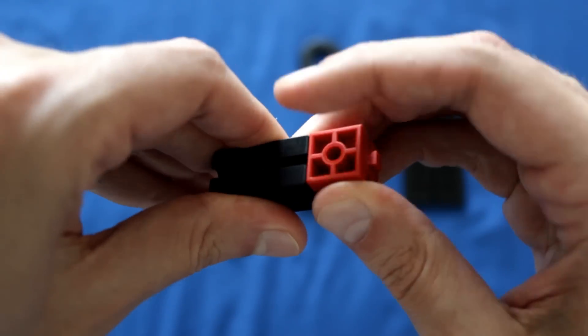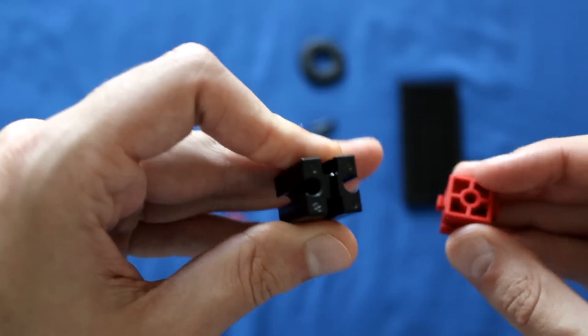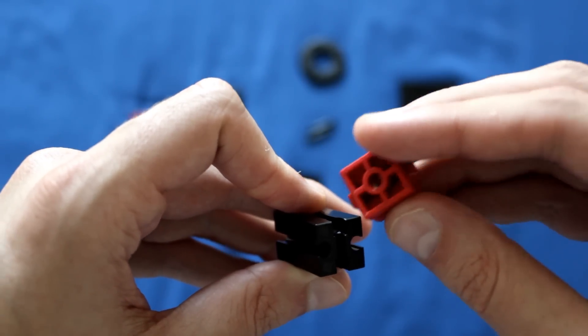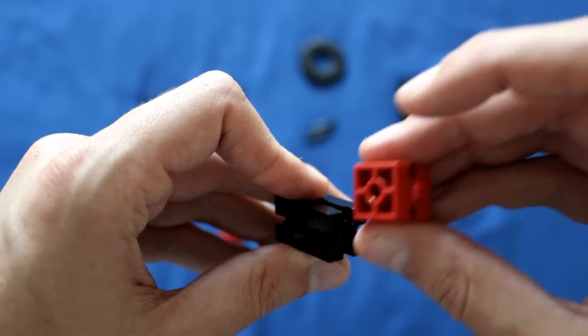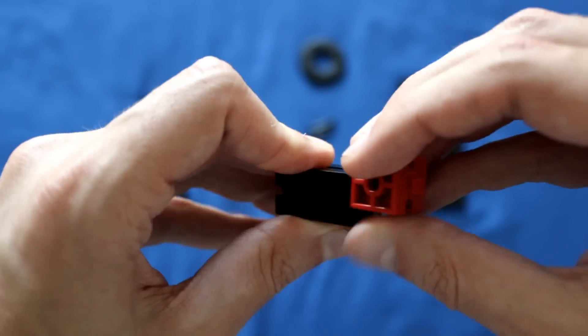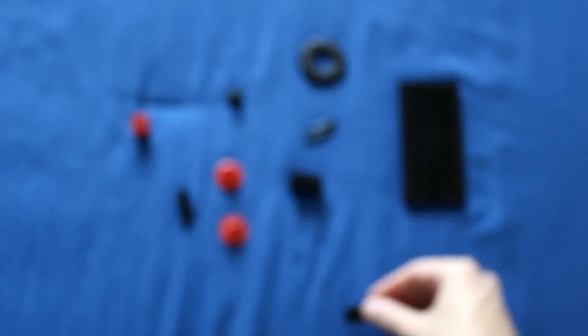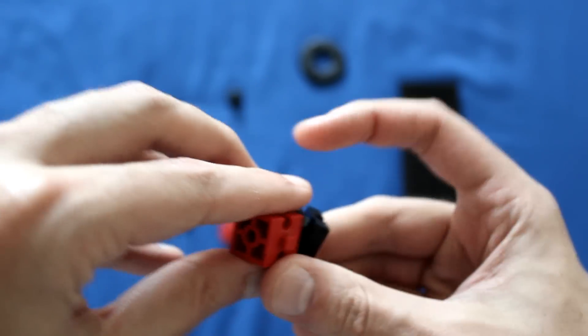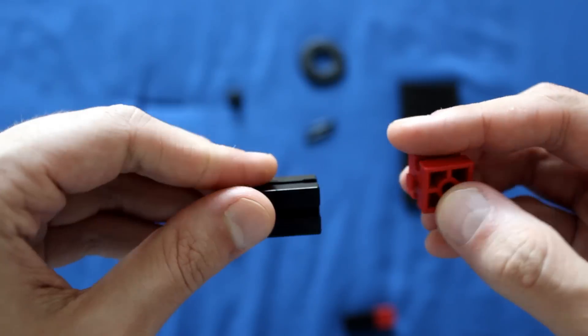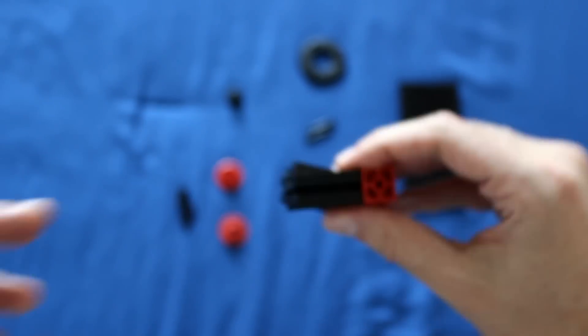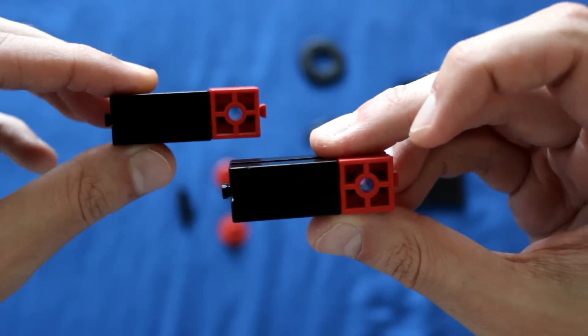Now, the important thing to notice when you're connecting these is you need this line back here to be running vertically down so that you can slide this piece in through the back into the middle. You need to make two of these. So let me go ahead and do one more. Now you should have two pieces that look like this.